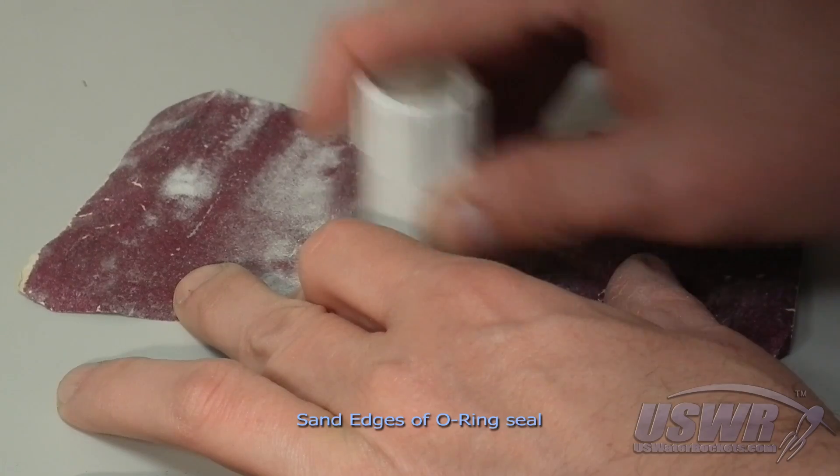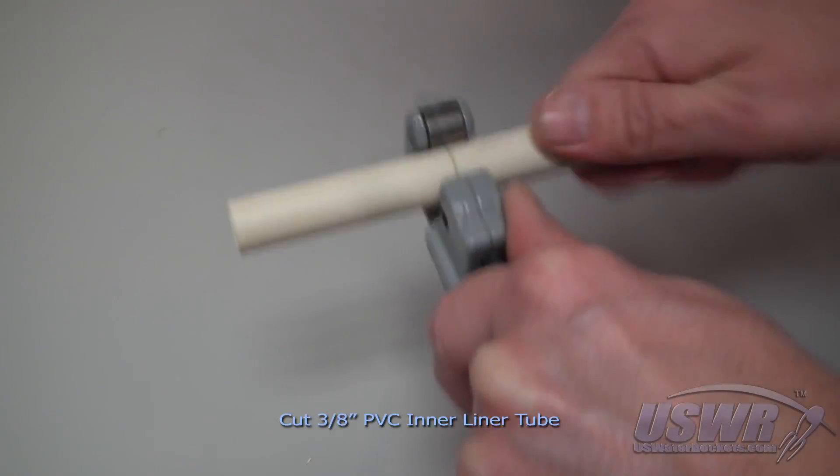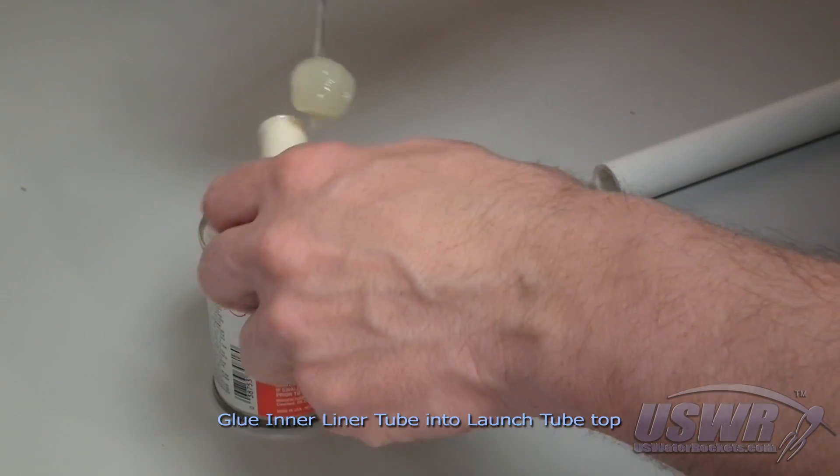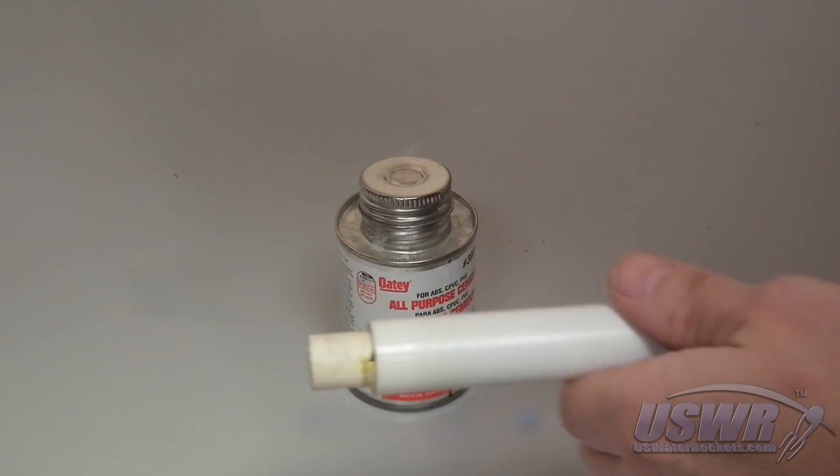Sand all of the launch tube cuts until they are smooth. Cut a 2 inch length of 3 1/8 inch PVC pipe for the inner liner tube. Glue 1 inch of the inner liner tube into the top section of the launch tube.